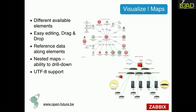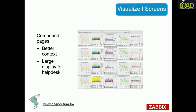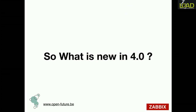Zabbix has maps with draggable elements, reference data via macros, nested maps, and UTF-8 support. Screens allow you to combine graphs, maps, websites, and other elements onto a single view — giving a composite dashboard. That covers Zabbix 3.0 — now let's look at what's coming in 4.0.